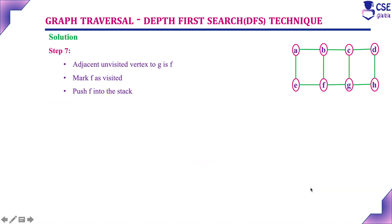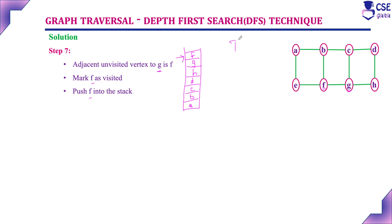Next step: currently visited vertex is G. The adjacent unvisited vertex to G is F only — C is already visited and H is also already visited. So the unvisited vertex adjacent to G is F. Mark F as visited and push F into the stack. The stack contents are now A, B, C, D, H, G, F, with F at the top. The traversal output is A, B, C, D, H, G, F.